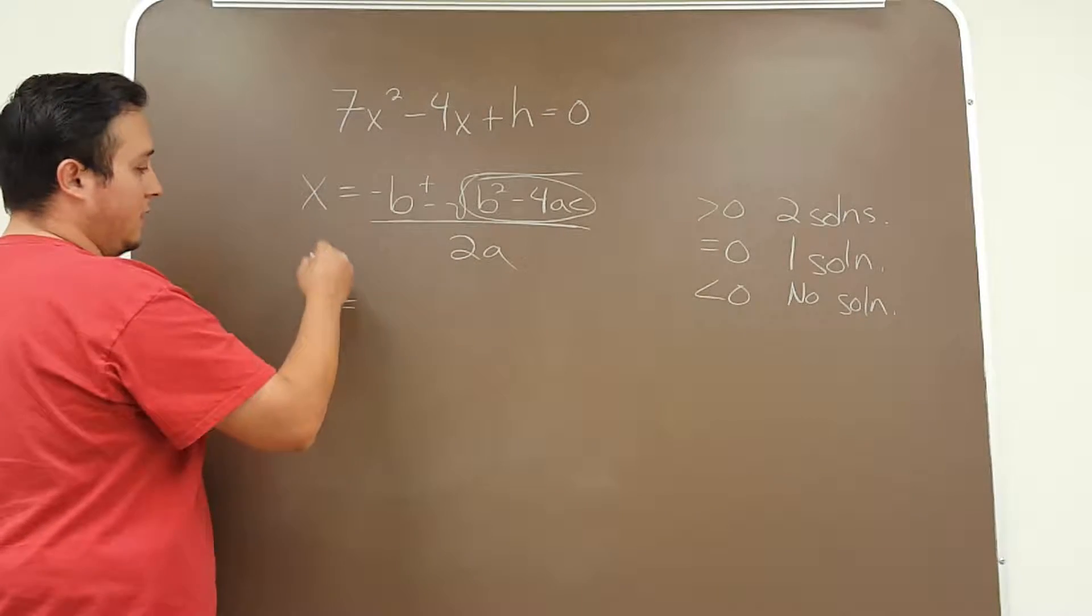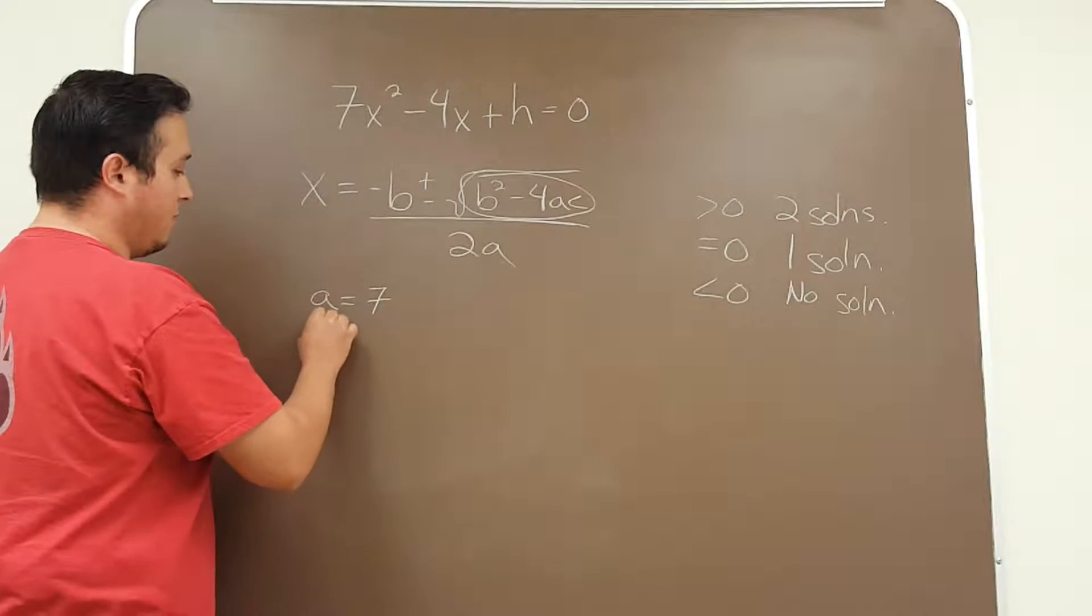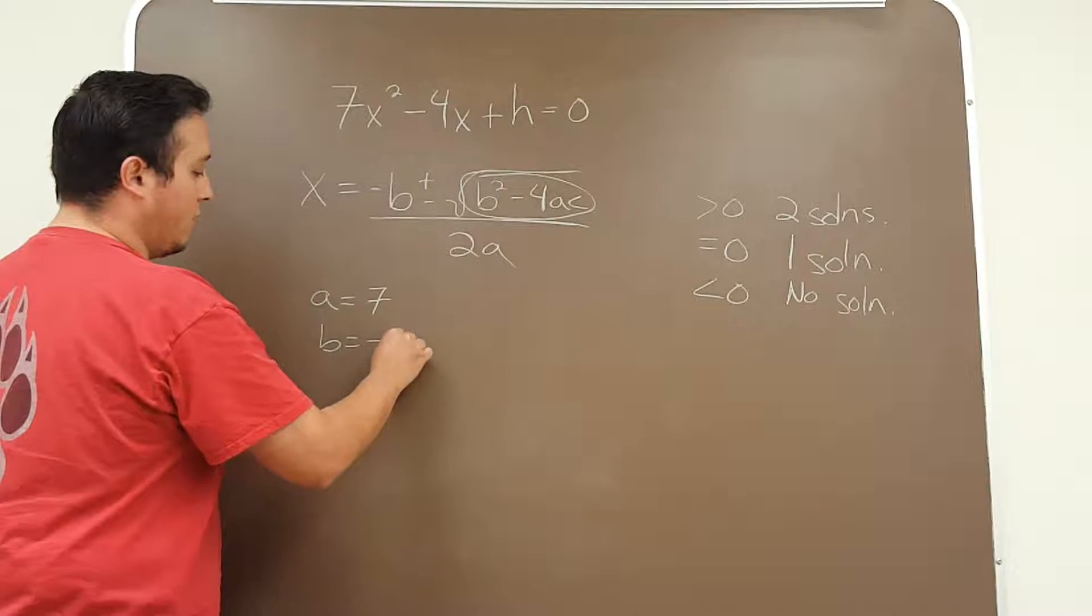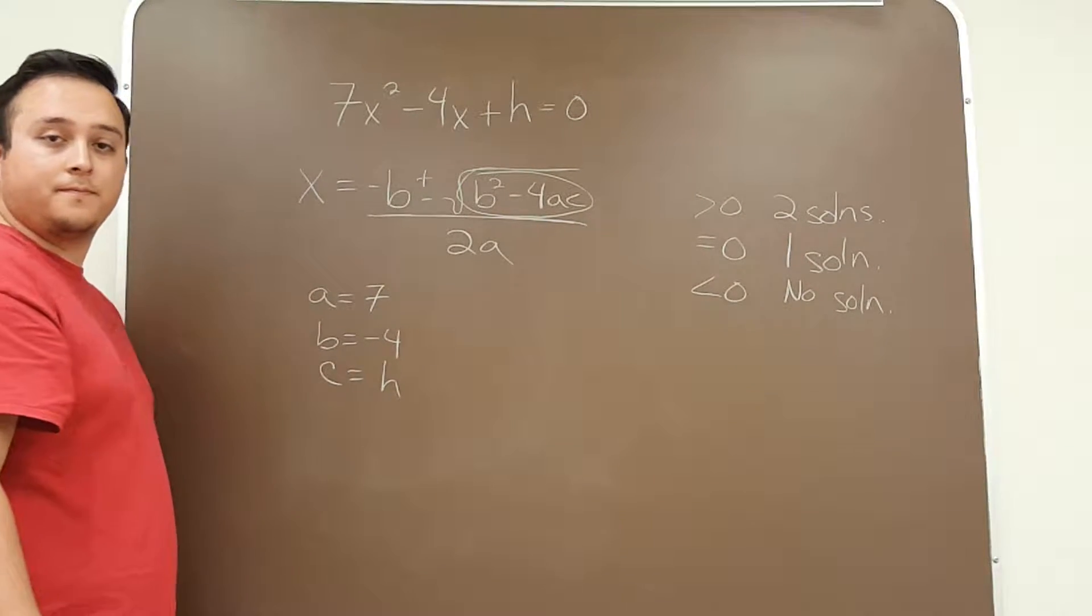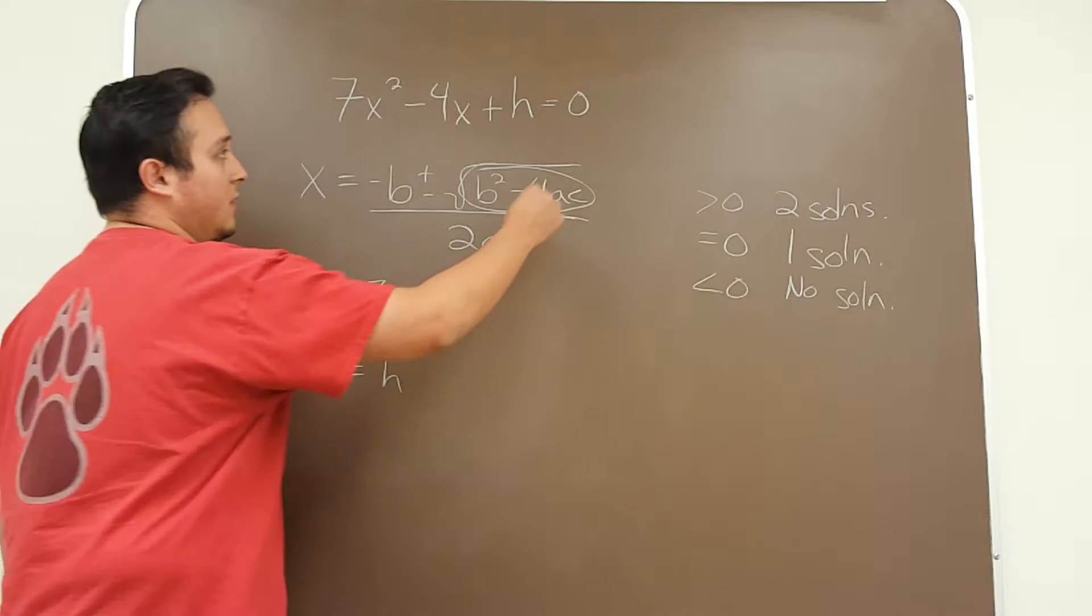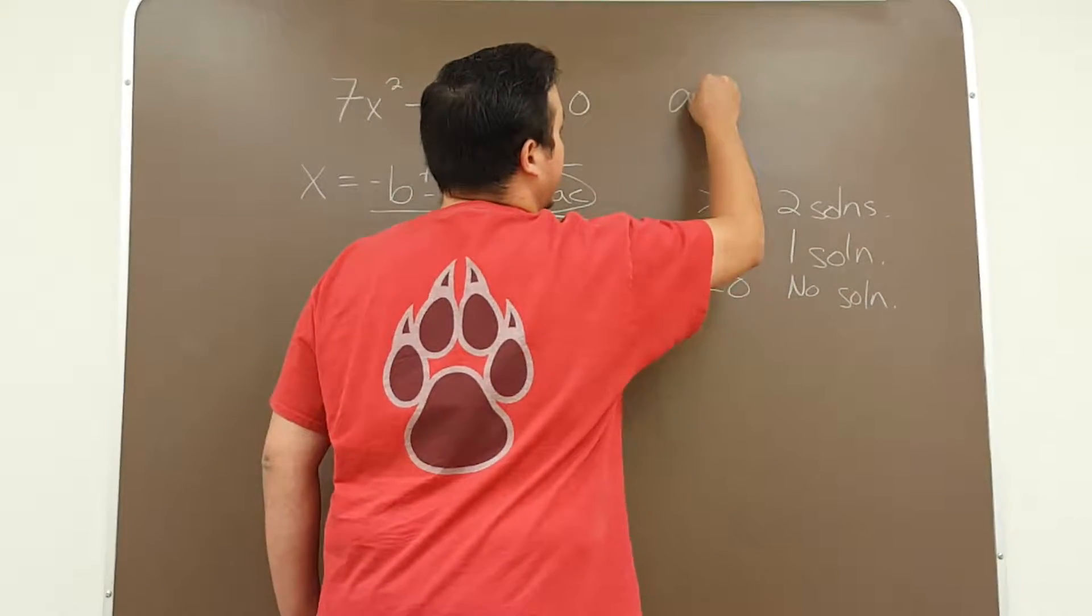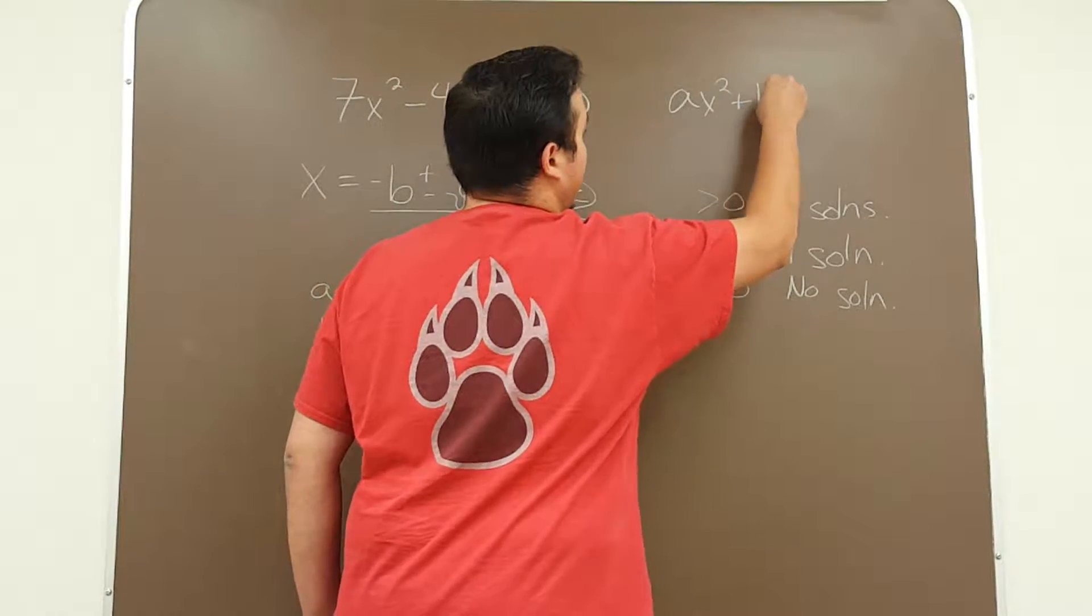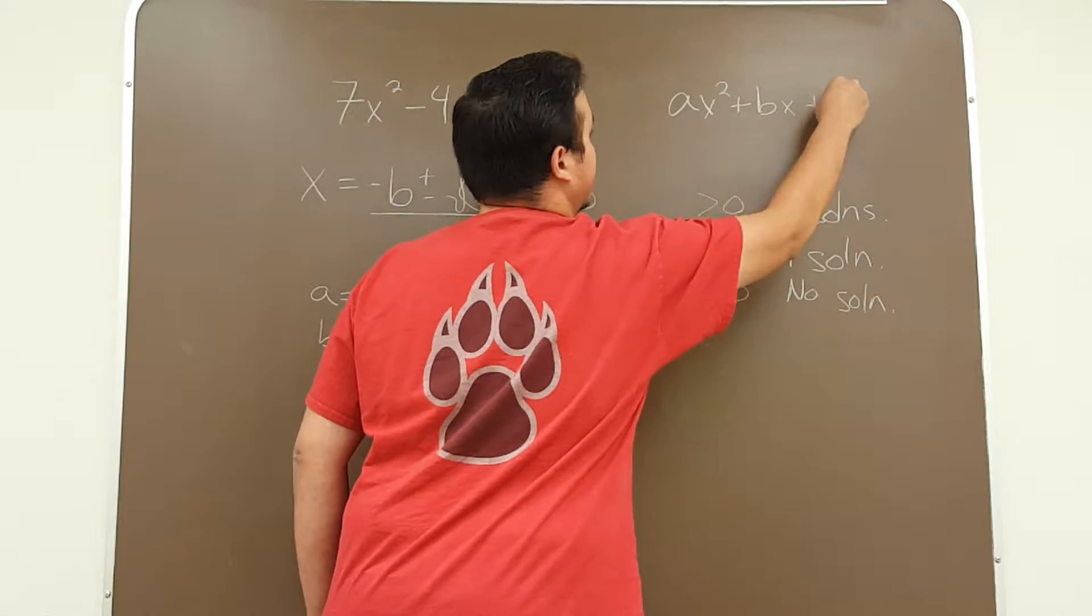Our a in this case is 7, our b is negative 4, and our c is h. This is because we're following the standard formula of the quadratic equation which is ax squared plus bx plus c.